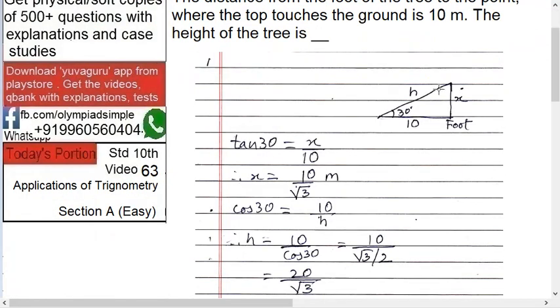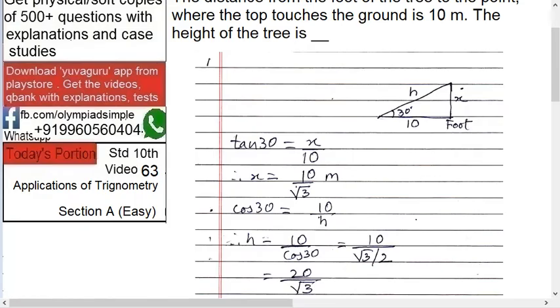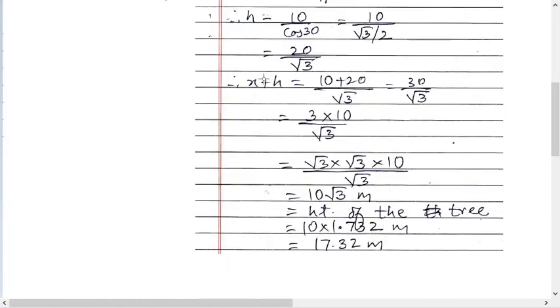Now we have to find h also. So cos 30 equals to what? Adjacent upon hypotenuse. Cos 30 is root 3 by 2, so h equals to, bring cos 30 down and h on the left side. So h equals to 10 upon cos 30, that is 10 upon root 3 by 2. So take 2 above, 20 by root 3.